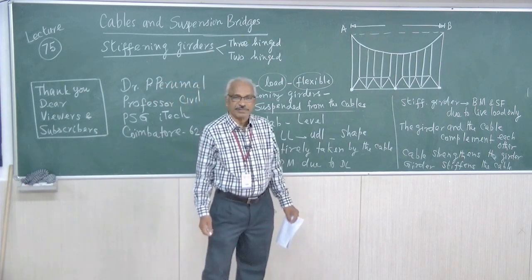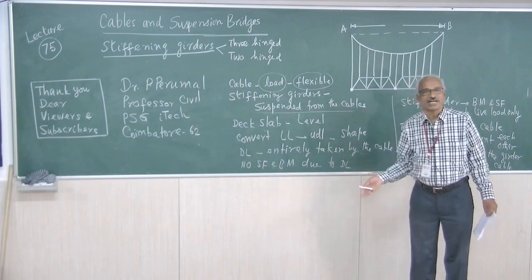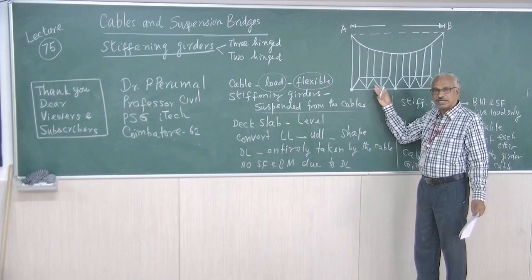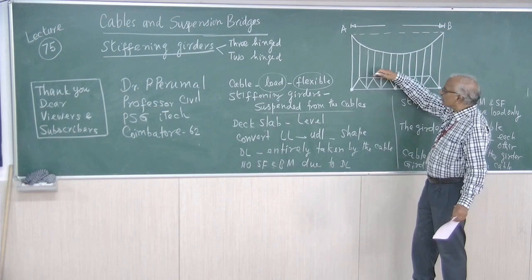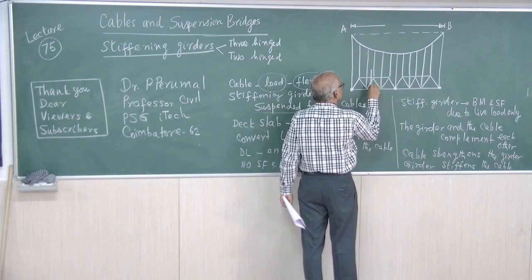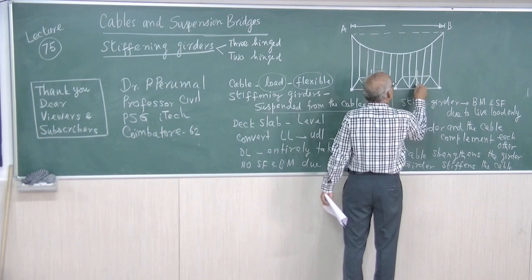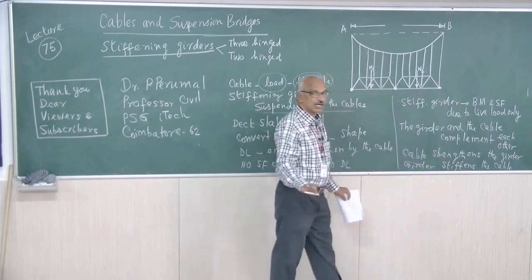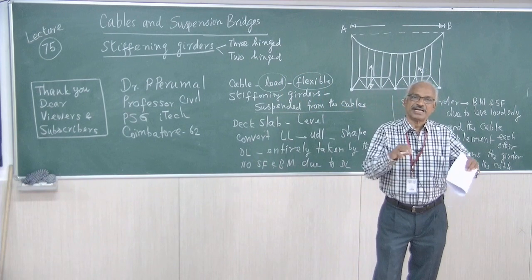The live load will cause bending moment and shear force in the stiffening girder. Dead load, whatever it may be, will be directly transmitted to the cable because the stiffening girder converts the load as UDL, and this UDL — since it is suspended from the cable — is transmitted to the cable. If the stiffening girder is subjected to two point loads W1 and W2, those are the live loads. Dead loads will be directly transmitted to the cable, but we are not going to discuss dead loads for now.